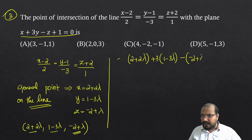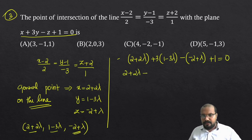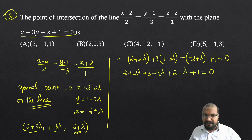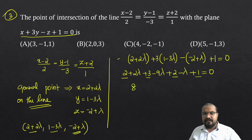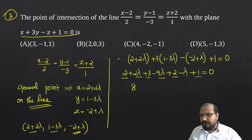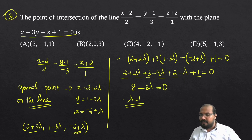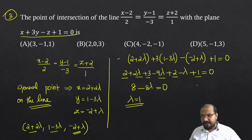We substitute the general point into the plane equation x + 3y - z + 1 = 0: (2 + 2lambda) + 3(1 - 3lambda) - (-2 + lambda) + 1 = 0, which gives 2 + 2lambda + 3 - 9lambda + 2 - lambda + 1 = 0, simplifying to 8 - 8lambda = 0, so lambda = 1.